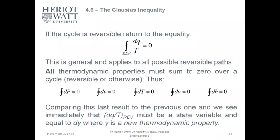Comparing this last result to the previous one, we see immediately that DQ over T reversible must be a state variable, and it goes to DY where Y is the new thermodynamic property, so it's constant. You can determine various different parameters from DQ over T because of that. It's a state variable, like your PVT.